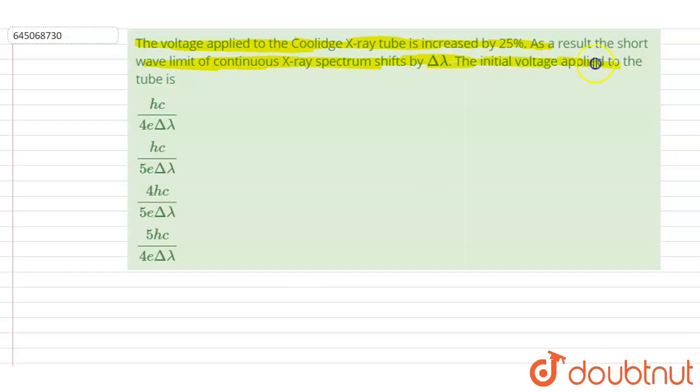As a result, the short wave limit of the continuous x-ray spectrum shifted by delta lambda. The initial voltage applied to the tube is?